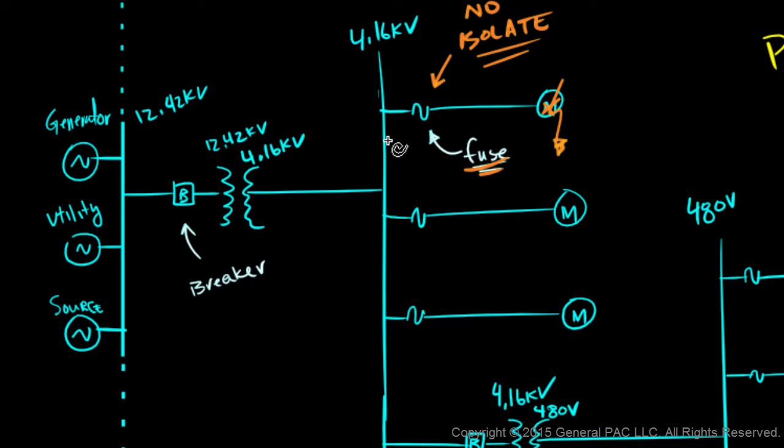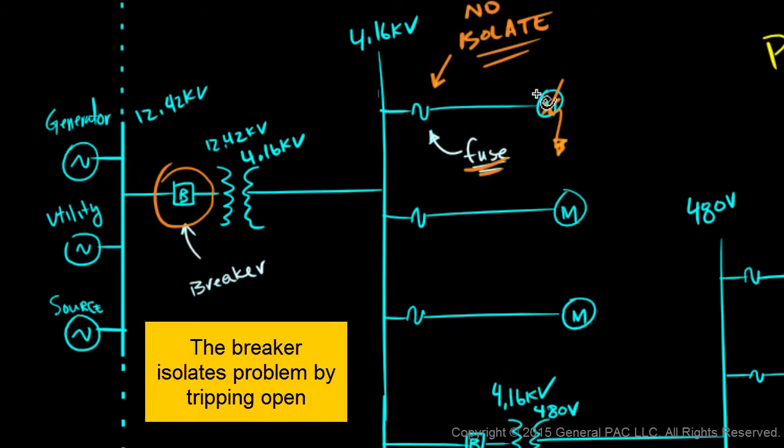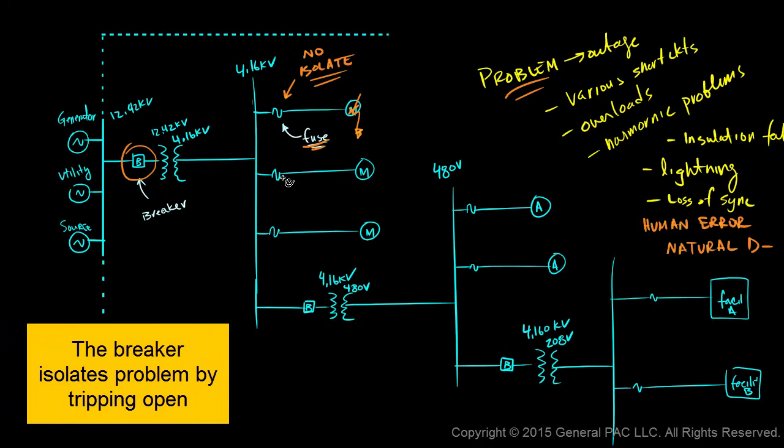Well, the next upstream device, which is this breaker, we should expect this breaker to isolate the problem. But what happens if this breaker isolates the problem? Well, what was a single problem on this single motor has now affected everything downstream. It has affected all the motors that are off of this 4.16 kV bus. It has also affected the 480 volt bus and the 208 volt bus.